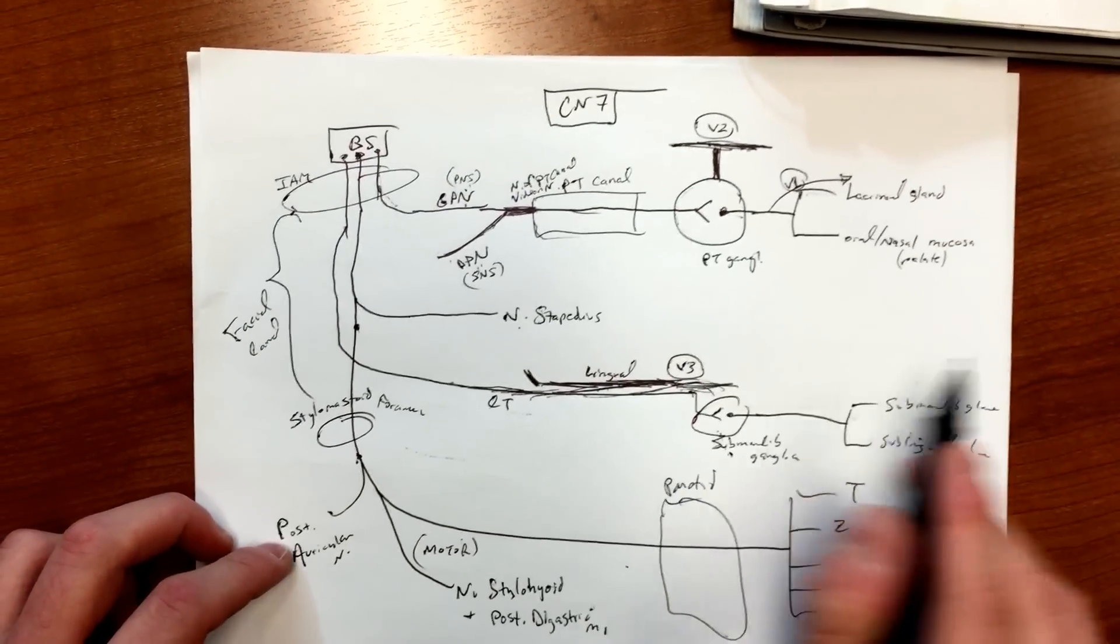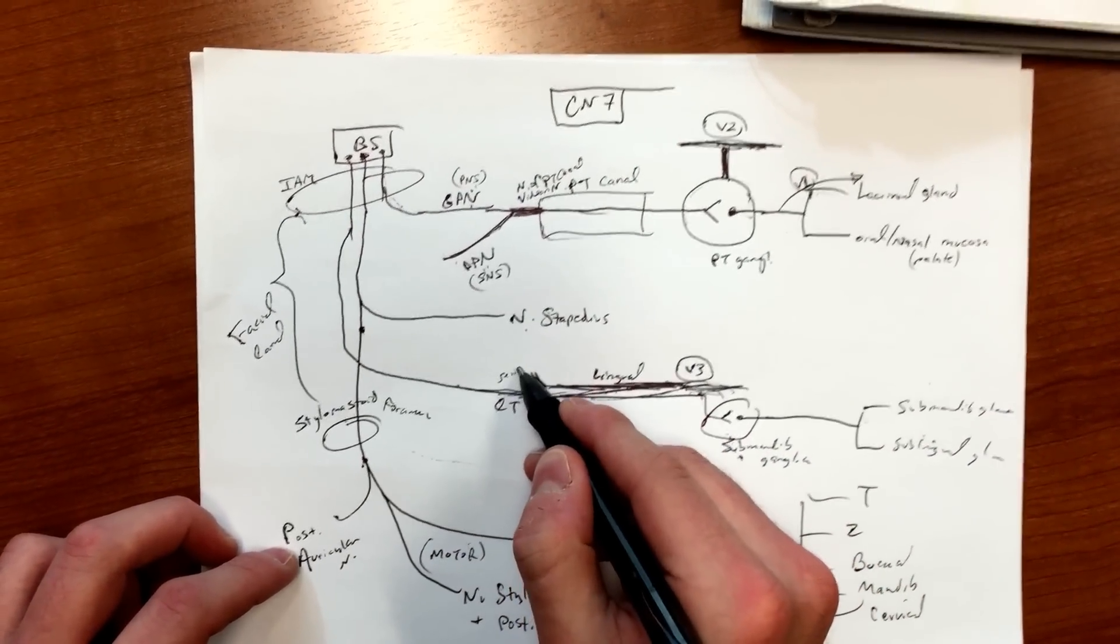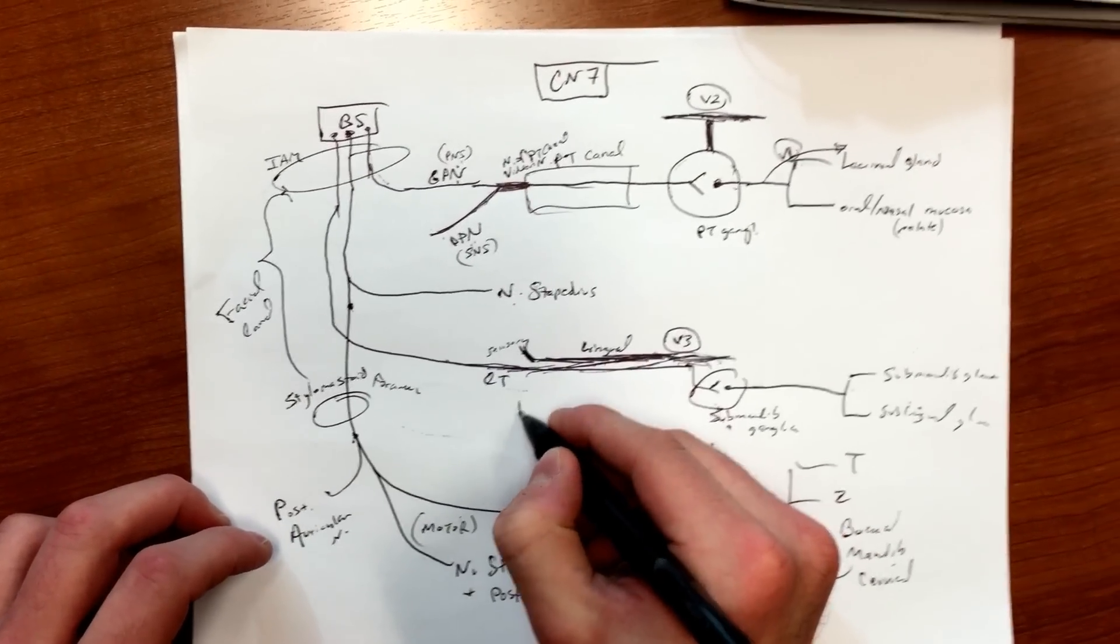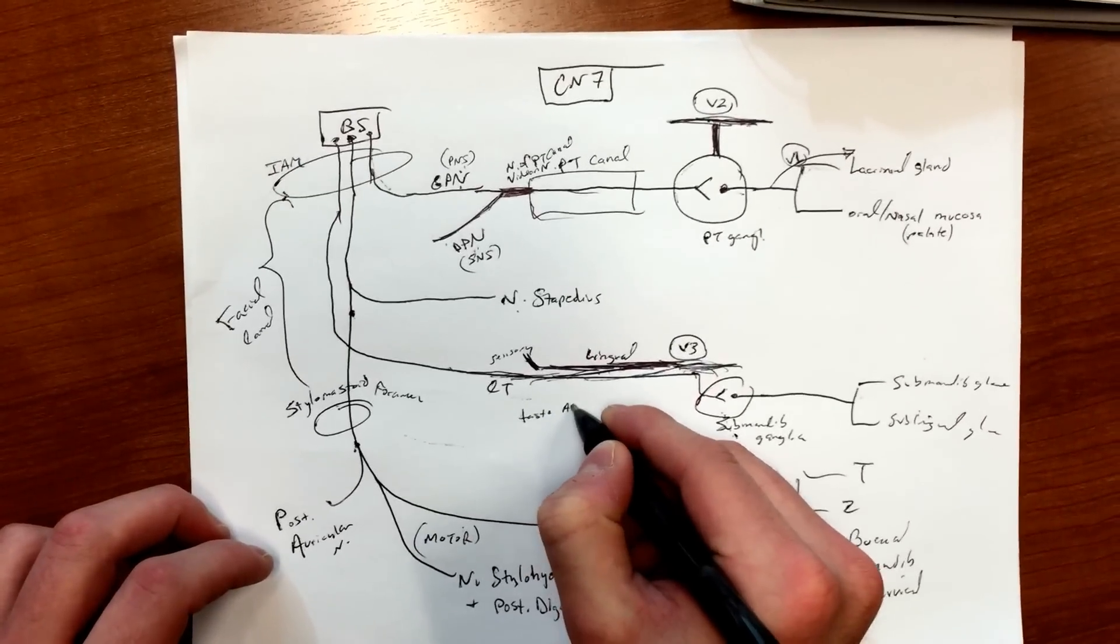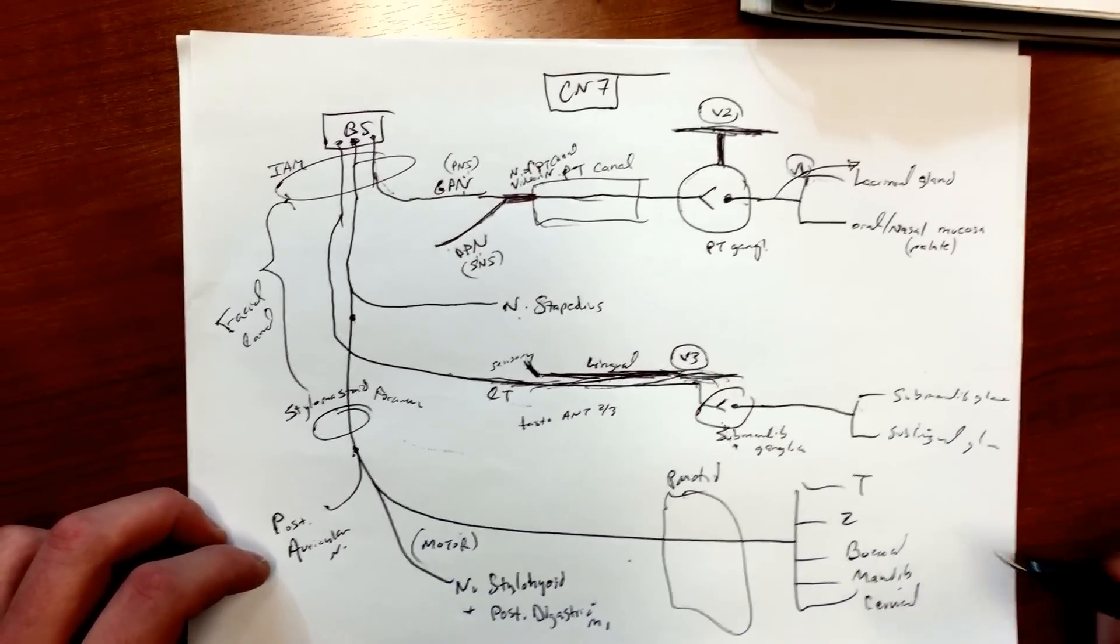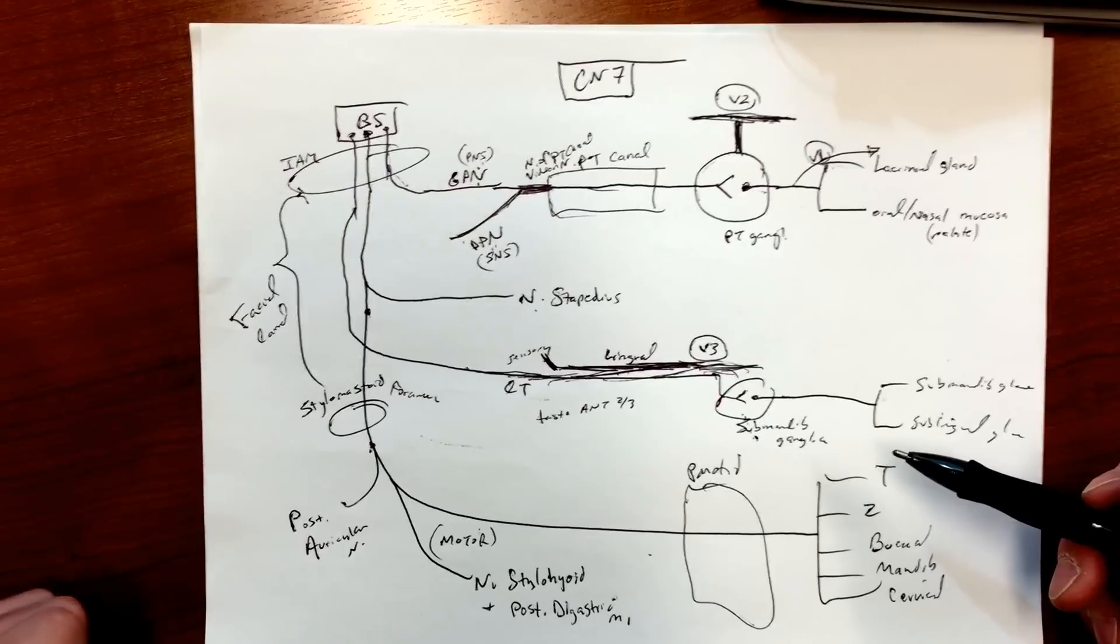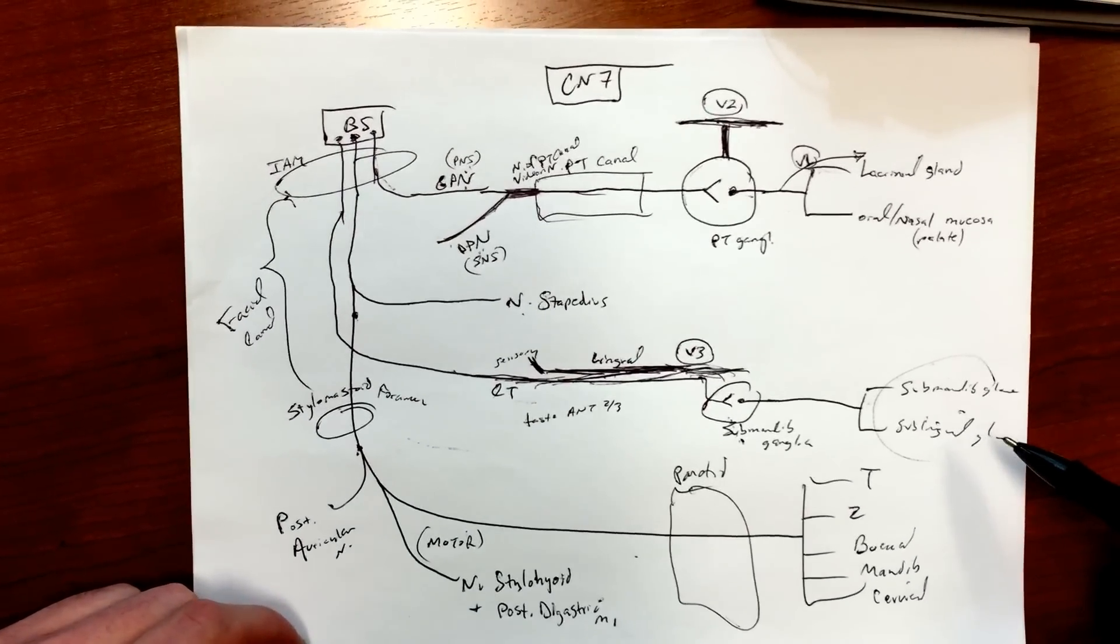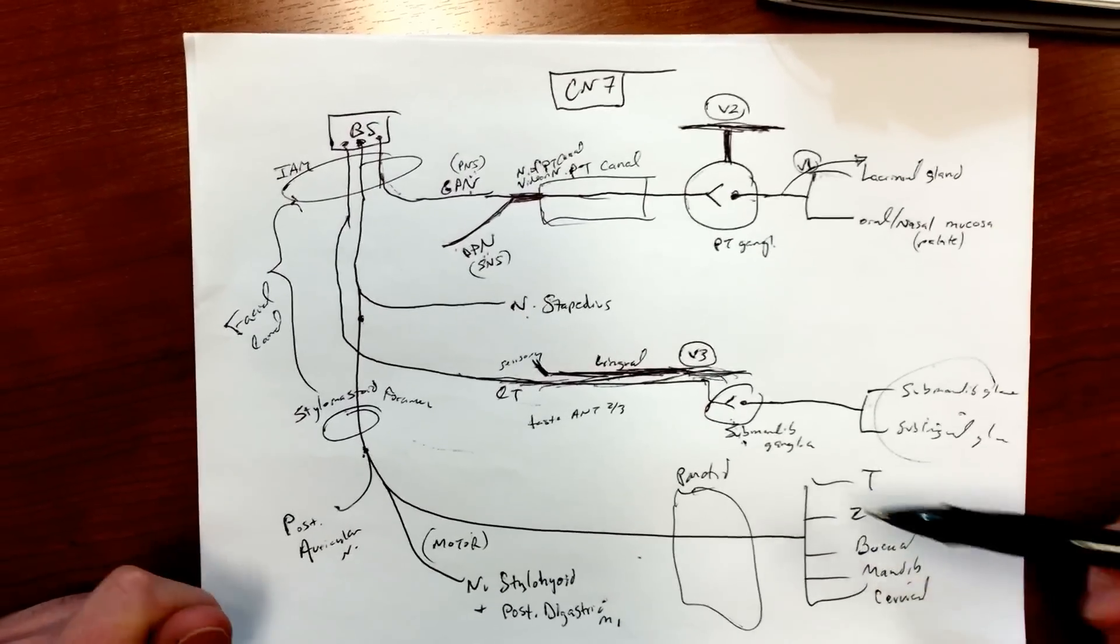And to keep in mind, you have sensory fibers, and chorda tympani also does, I believe, taste to the anterior two-thirds of the tongue. And obviously secretomotor to glands, so it's doing sensory and parasympathetic - there's your parasympathetic.